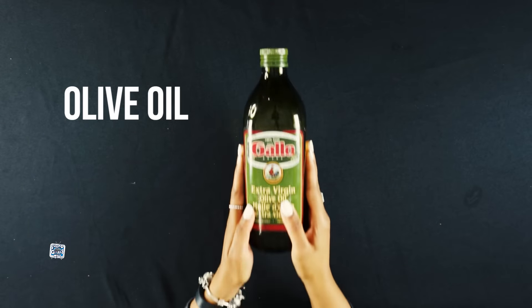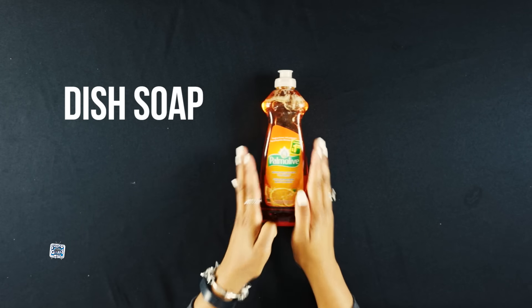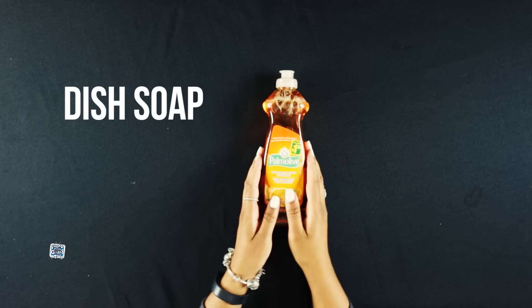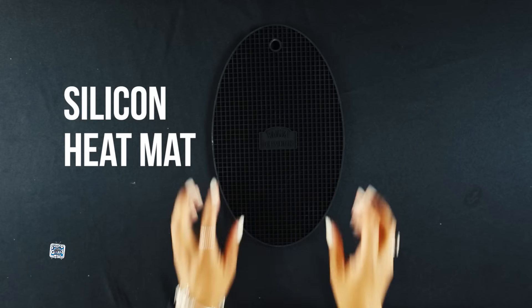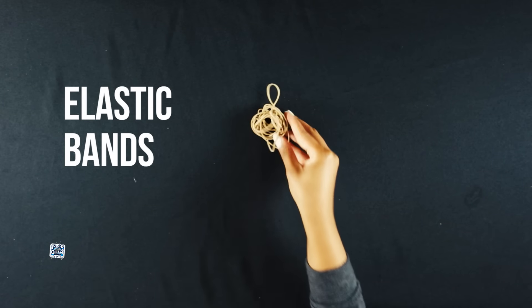So what you'll need for this is olive oil, antibacterial dishwashing soap or hand soap, a bowl, a silicone heat mat, a cutting board, and elastic bands.